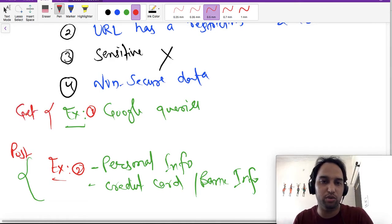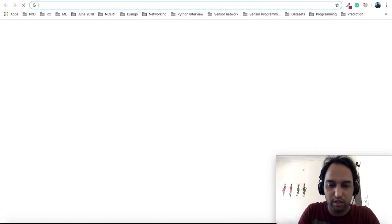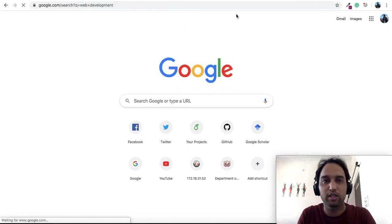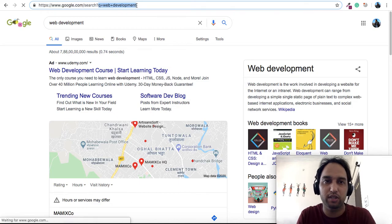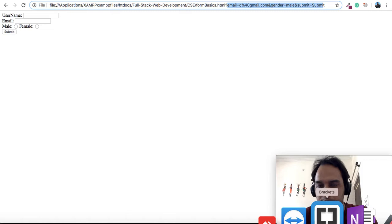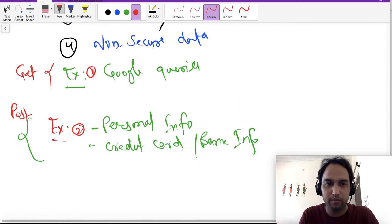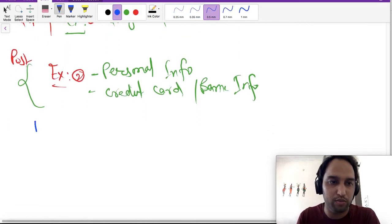You can type anything on Google and see whenever you type something or search something. Let us search web development, and you can see here is the query string. So in this way these methods work.